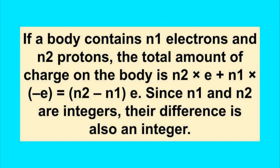If protons and electrons are the only basic charges in the universe, all observable charges have to be integral multiples of E. Thus, if a body contains N1 electrons and N2 protons, the total charge on the body is N2 into E plus N1 into minus E, which equals N2 minus N1 into E.